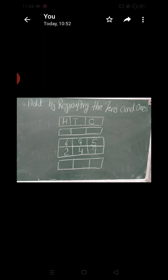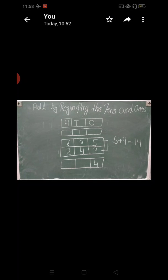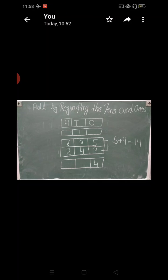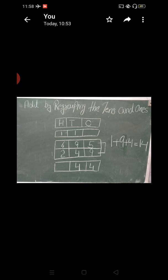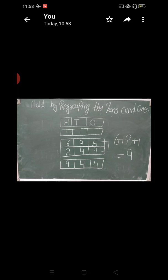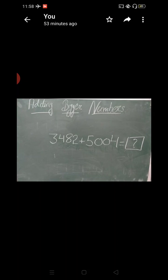Now we are doing the next question: adding by regrouping both tens and ones. In this question, both regroupings occur — ones and tens. First of all, we add the ones place digits: 5 plus 9 equals to 14. So I write 4 in the ones place and 1 in the tens place. In the next step, I add the tens place digits: 6 plus 2 plus 1 equals to 9. And our final answer is 944.